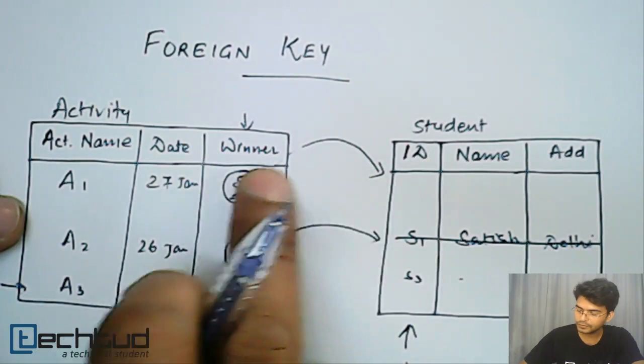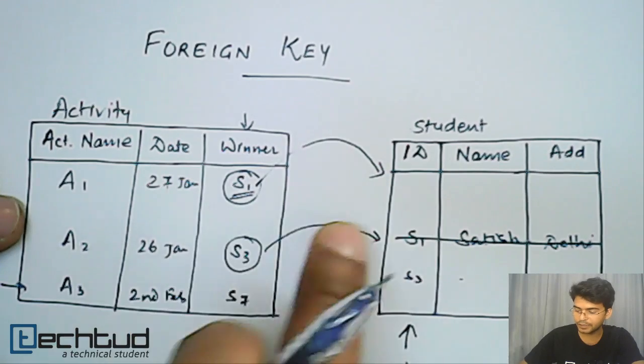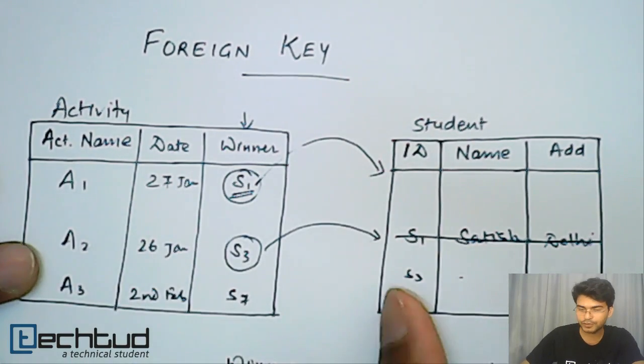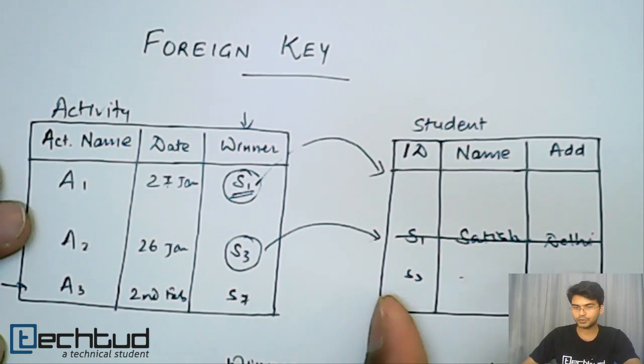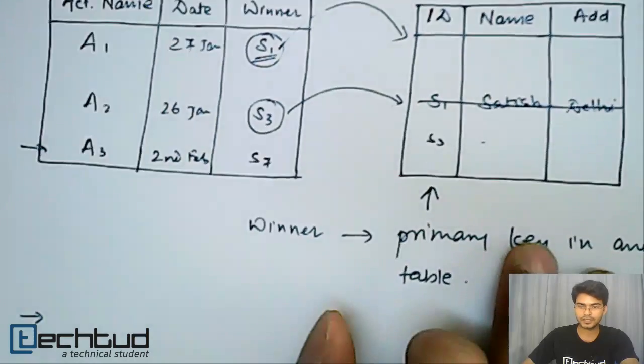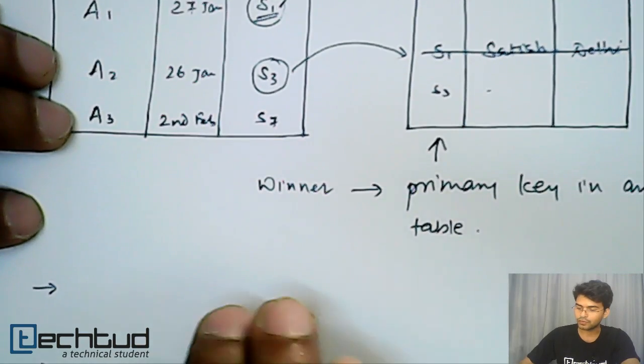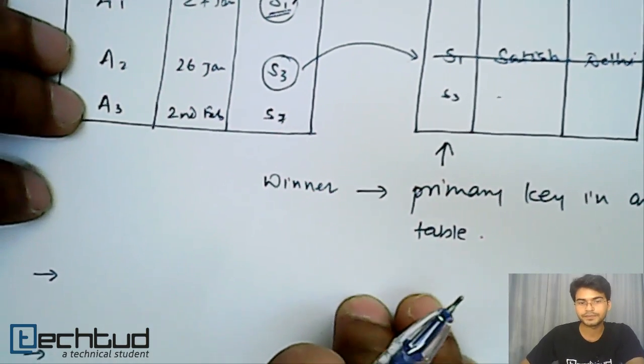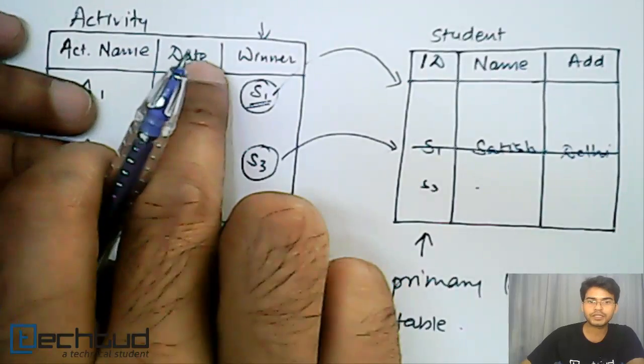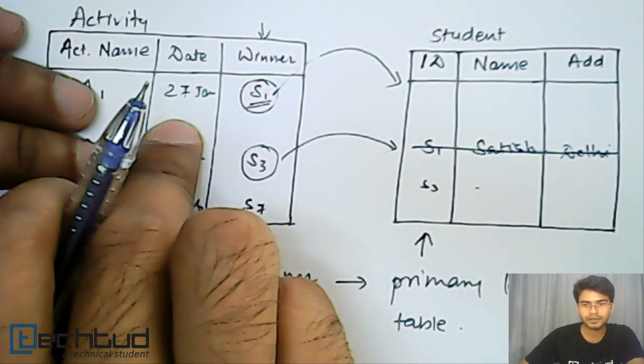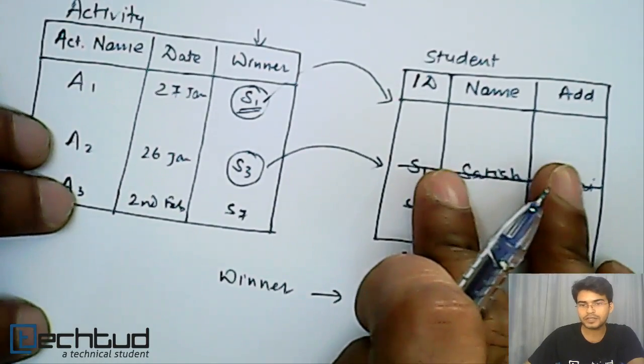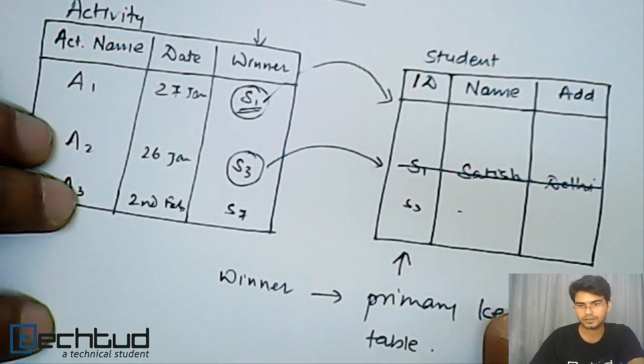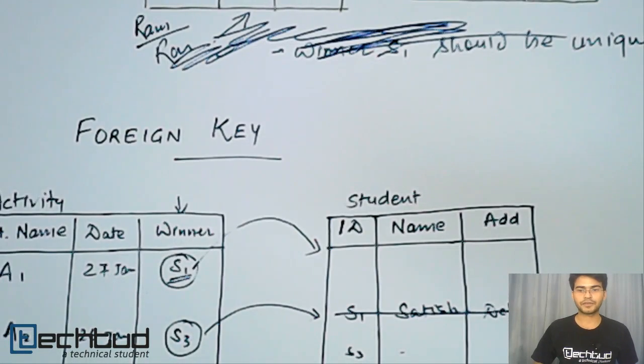Otherwise it will be a dangling pointer. We have to delete all the references before we delete the entry from this student table. So these two important constraints are there over this foreign key. Before we enter the foreign key into the table, we have to have that key present in this parent table. So I hope you understand this. If you have any doubt, ask your question. Thanks for watching.